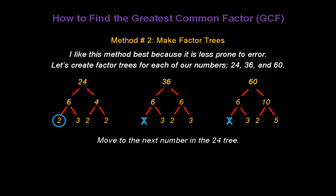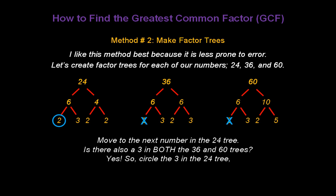Now move to the next number in the 24 tree, which is a 3. Is there also a 3 in both the 36 and the 60 trees? In fact, there is. So circle the 3 in the 24 tree, and don't forget to cross out one 3 in each of the other trees.